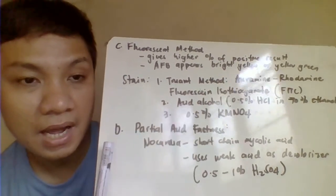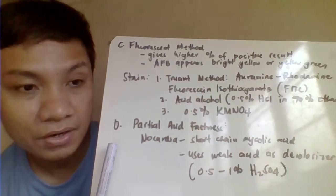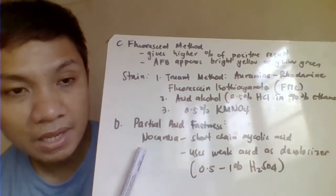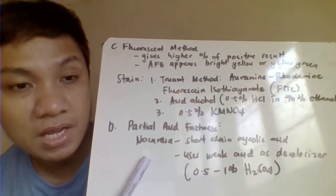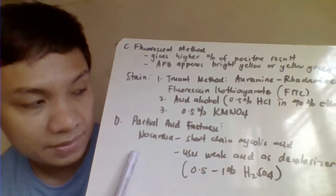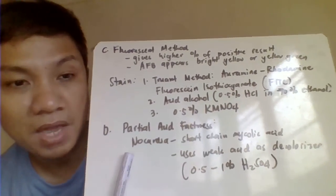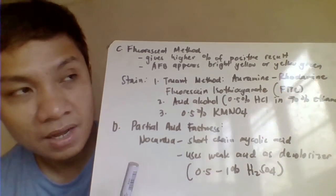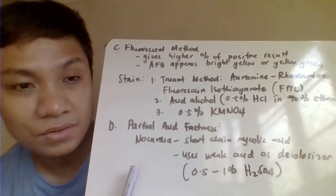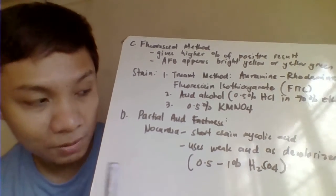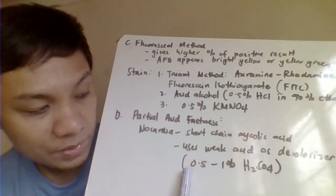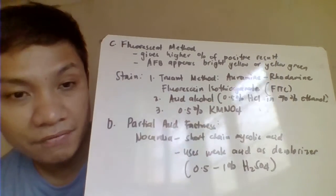Then we have also here the partial acid-fast. So in the case of your Nocardia, Nocardia would have also here mycolic acid only that one would have a shorter chain length of your mycolic acid. Especially acid-fast because again, it may make use of acid decolorizer, which is not a strong acid, which is not an acid alcohol, but a weak acid.